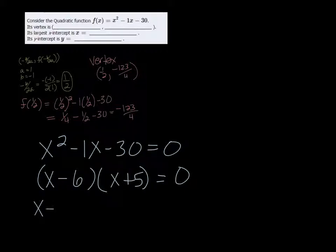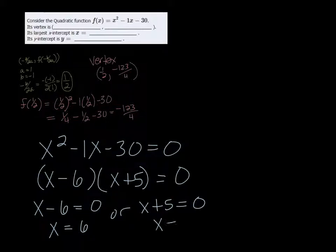And if you set each one of those equal to 0, you get that x equals 6, or x plus 5 equals 0, in which case x equals negative 5. But it says to put the largest x-intercept, and that one would be 6. So we're going to put 6 in there.